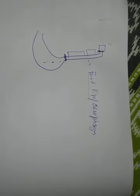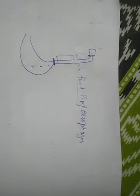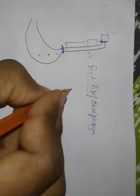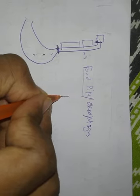In the food pipe, there is a special process by which the food moves downward, which is called peristalsis.